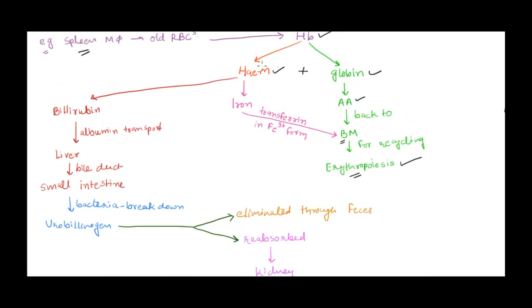Now let's come to heme. Heme breaks down further into bilirubin and iron. Iron is needed for erythropoiesis, so it's also transported back to bone marrow for recycling. Iron cannot simply be transported through blood - it needs a transport protein called transferrin. In the form of Fe3+, it's transported back to bone marrow to be reused in erythropoiesis.